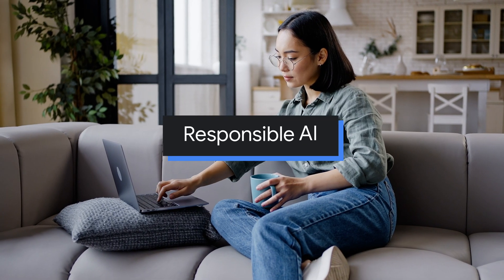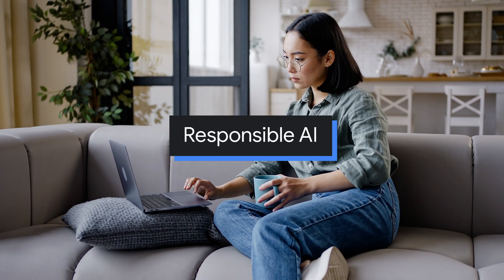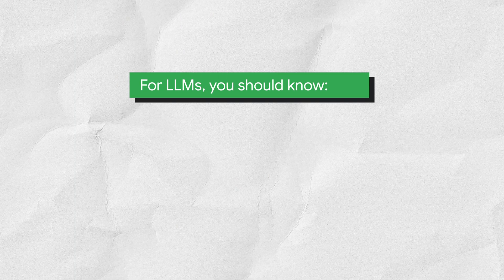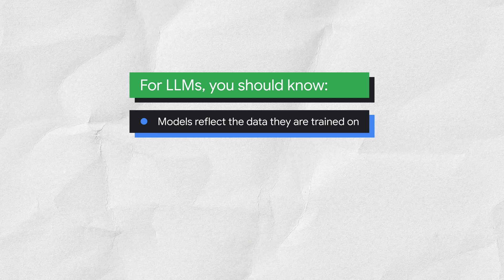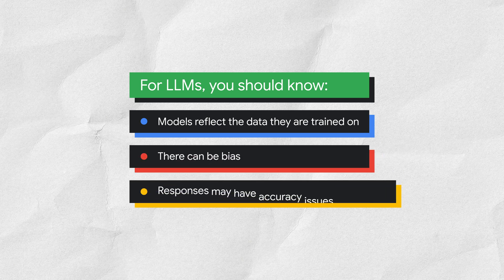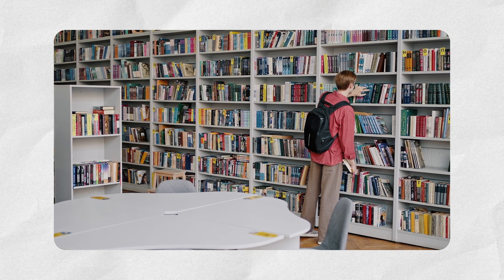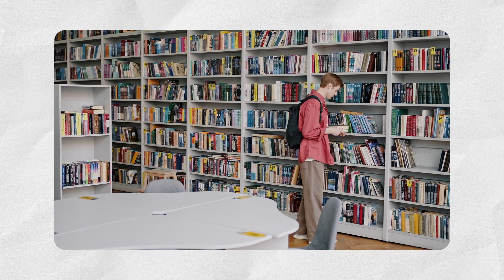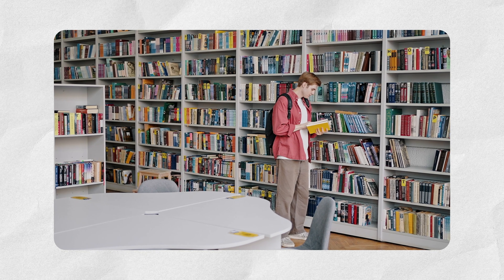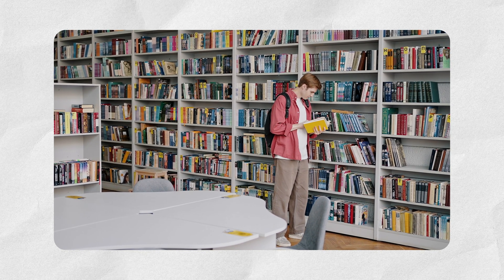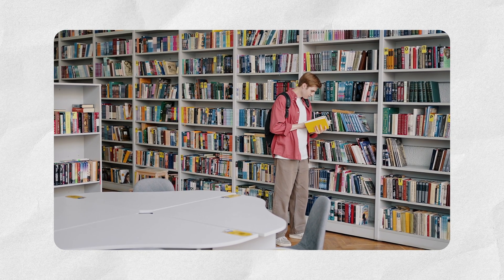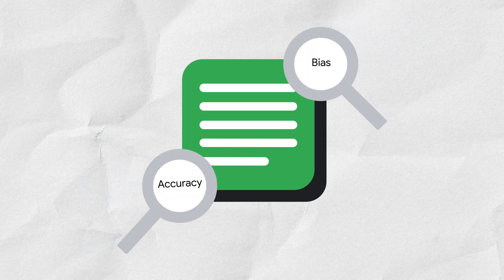It's important to keep responsible AI practices in mind when interacting with any AI technology. Specifically for large language models, or LLMs, you should know: models reflect the data they are trained on, there can be bias, and responses may have accuracy issues. Imagine learning from a mountain of books — while they provide a wealth of knowledge, they may also contain outdated, biased, or inaccurate information, so you must critically evaluate your sources. It's important that users of AI technologies critically evaluate the output for both bias and accuracy.